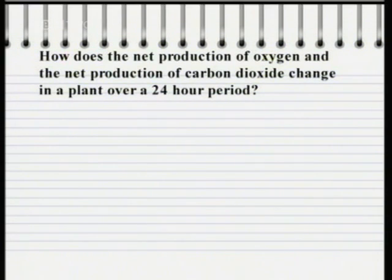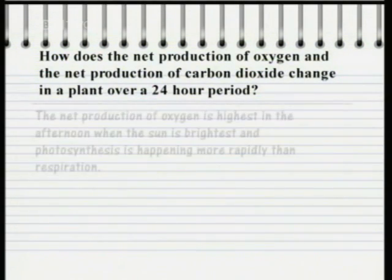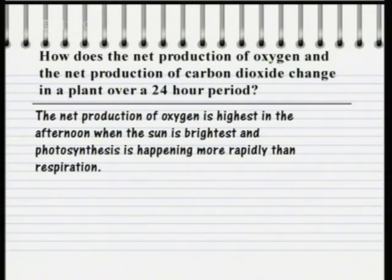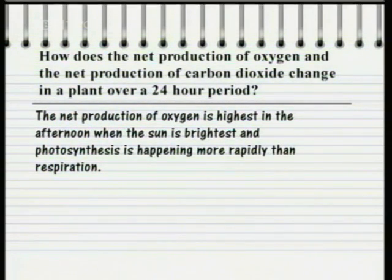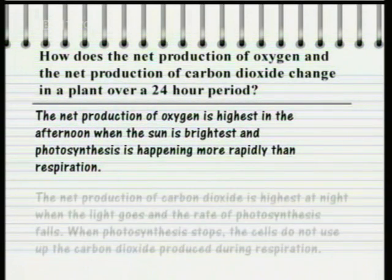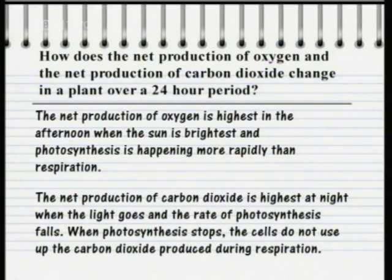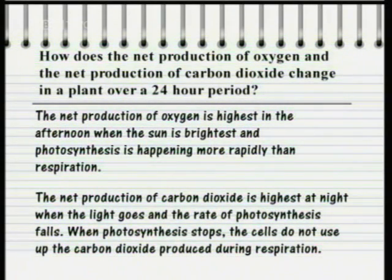How does the net production of oxygen and the net production of carbon dioxide change in a plant over a 24-hour period? The net production of oxygen is highest in the afternoon when the sun is brightest and photosynthesis is happening more rapidly than respiration. The net production of carbon dioxide is highest at night when the light has gone and the rate of photosynthesis falls. When photosynthesis stops, the cells do not use up the carbon dioxide produced during respiration.